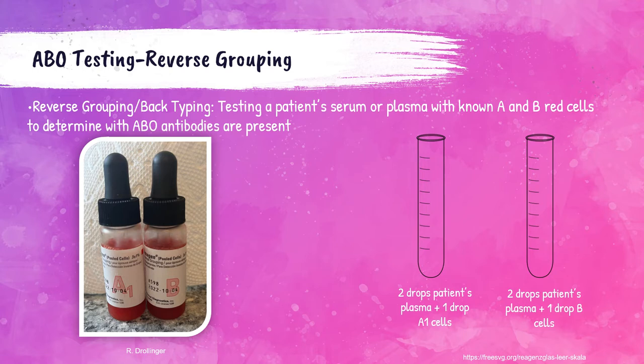If the patient's serum or plasma contains anti-A antibodies, the tube with the A1 cell reagent should agglutinate because those cells contain A antigen. If the patient contains anti-B antibodies in their serum or plasma, the tube with the B cell reagent should agglutinate because those cells contain B antigen. Again, this is just a brief overview — to see the procedure step-by-step, please check out the video listed below.